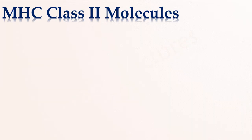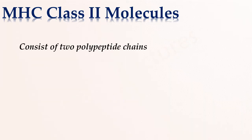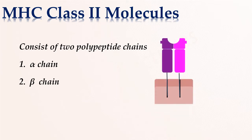The class 2 MHC molecules consist of two polypeptide chains: alpha chain and beta chain. Both are anchored in the plasma membrane and both are encoded by genes in the MHC complex.